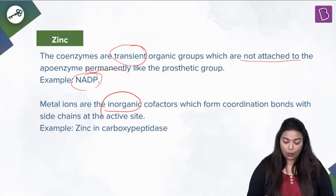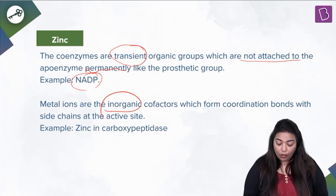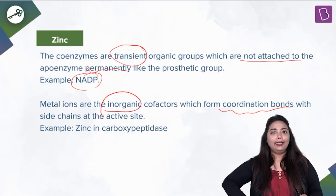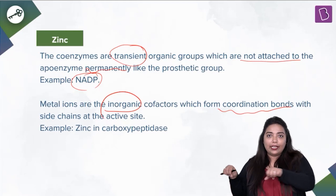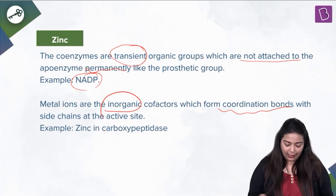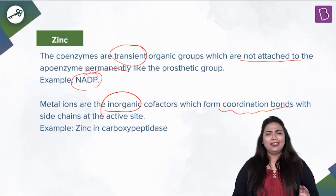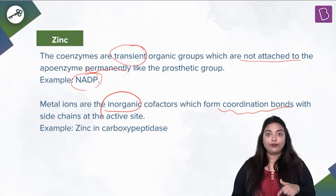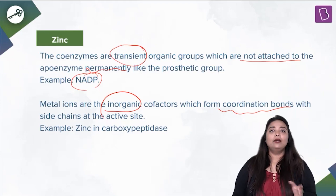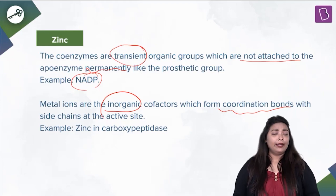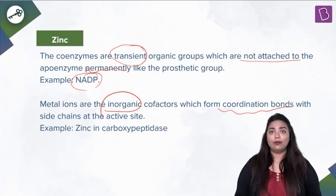Metal ions are inorganic co-factors that form coordination bonds with the side chains — for example, zinc in carboxypeptidase. Keep this in mind. Definitions of prosthetic groups, co-factors, and co-enzymes are important — in entrance exams you may get a definition as a question with options as answers, and in subjective papers it will be the opposite.